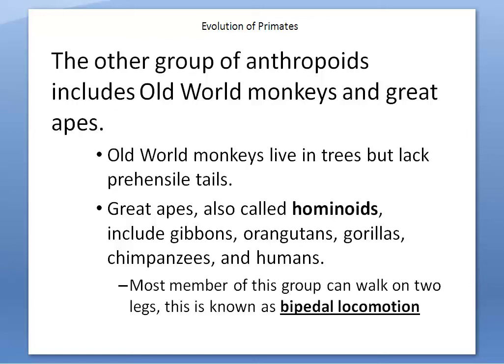Finally, most members of our hominoid group — gibbons, orangutans, gorillas, chimps, and humans — can walk on two legs, known as bipedal locomotion: 'bi' meaning two, 'locomotion' meaning movement. That wraps up our section on primates. Let me know if you have any questions.